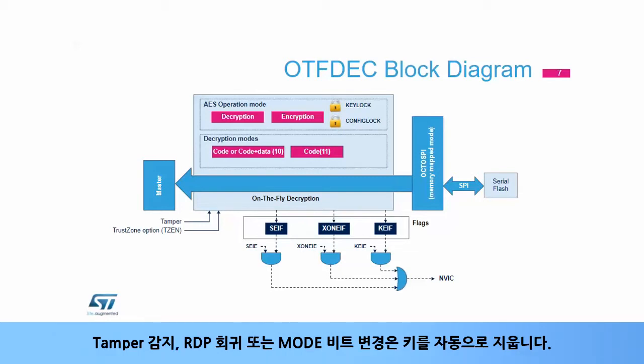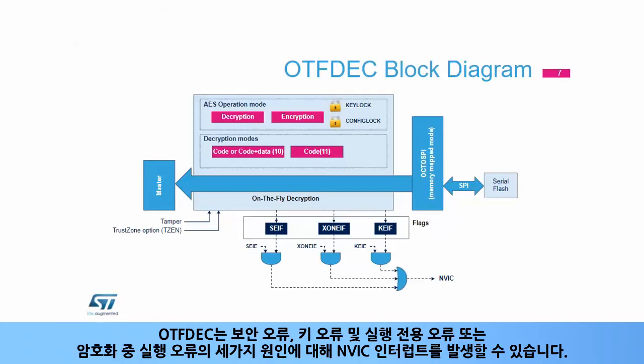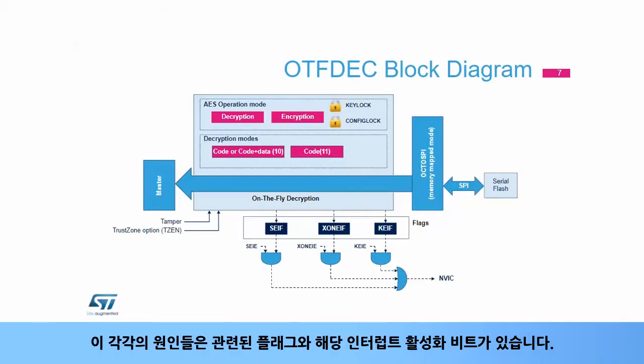A tamper detection, an RDP regression, or a mode bits change automatically erases the keys. The OTF-DEC can assert an interrupt to the NVIC for three possible causes: security error, key error, and execute-only or execute-while-encryption error. Each of these causes has a dedicated flag and interrupt enable bit.